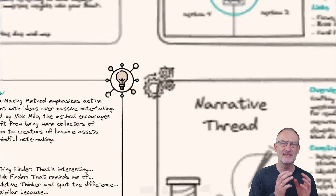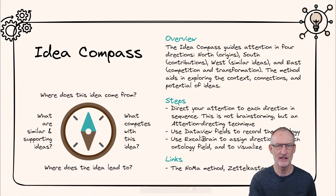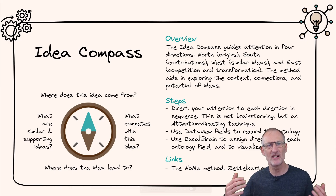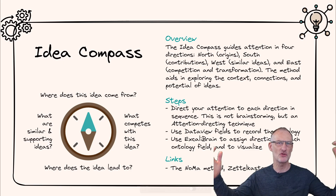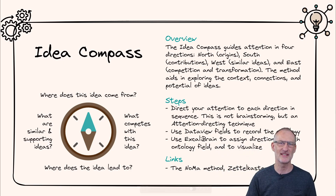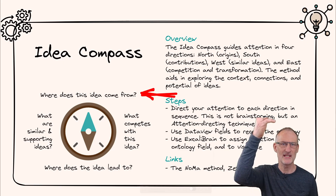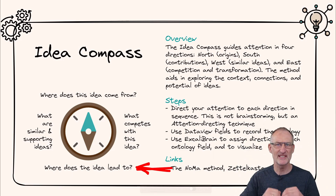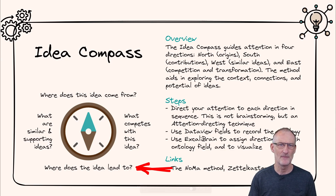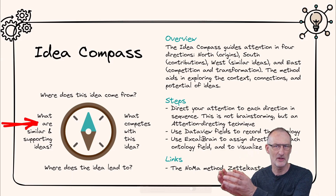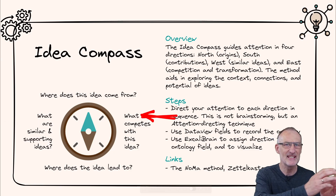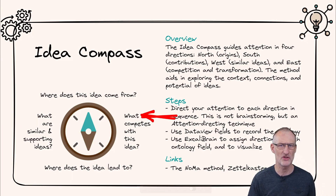The NOMA method is supercharged by the idea compass. Based on your ontology for the links, the idea compass adds a spatial context to your connections in Excalibrain. To the north are the origins, the parent ideas. To the south are the next level ideas and examples. To the west are similar ideas, and to the east are ideas that oppose or supercharge the idea you're exploring.